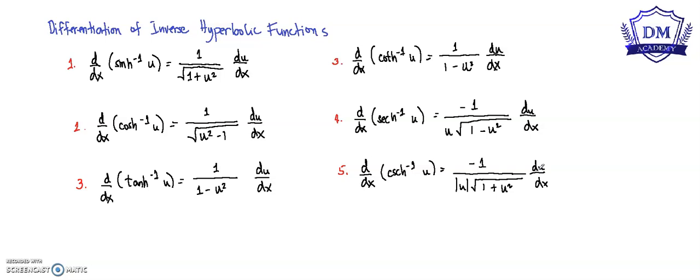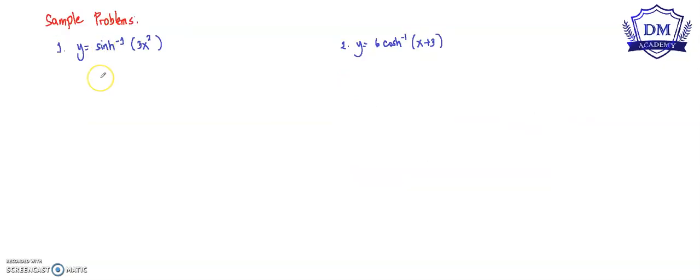To understand more about the differentiation of inverse hyperbolic functions, let's answer this problem. Our function y is equal to the inverse hyperbolic sine of 3x squared.